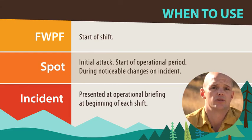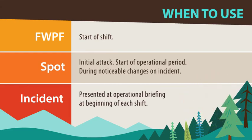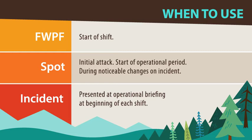Read your local fire weather planning forecast at the start of each shift to gain an understanding of your local fire weather situation. Spot fire weather forecasts are very helpful on prescribed fires, hazmat incidents, or emerging wildfires — request a spot forecast at the beginning of each operational period or if the weather changes significantly, rendering the current spot invalid. The incident forecast is typically produced for each operational period and should be used in the same manner as a spot forecast. You can also get a spot forecast from an IMET on an incident, but that request goes directly through the IMET and not the NWS.